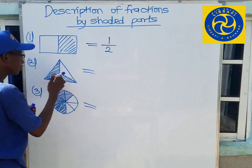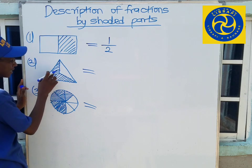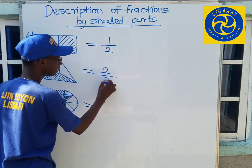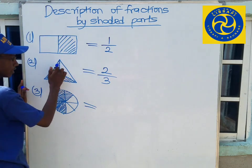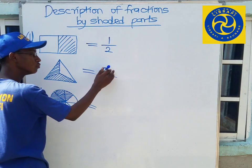Now if the shape has three parts total, and I shade two parts out of three, this becomes the fraction two out of three, or two over three.